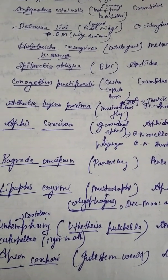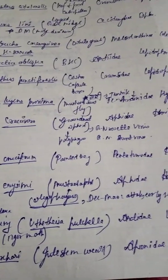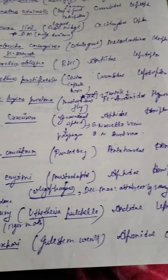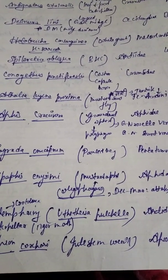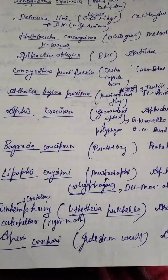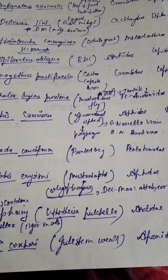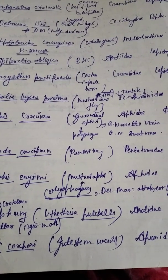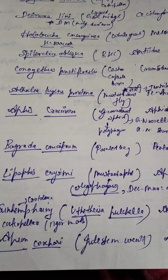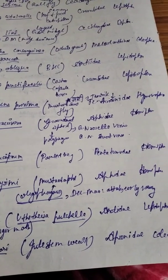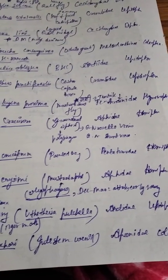Also remember castor capsule borer: Conogethes punctiferalis, family Crambidae, order Lepidoptera. Mustard sawfly is Athalia lugens proxima, family Tenthredinidae, order Hymenoptera. In Hymenoptera the majority are parasitoids, but this is the only major pest of Hymenoptera. Groundnut aphid is Aphis craccivora — very important because it is the vector of groundnut rosette virus and groundnut stunt virus. Painted bug is Bagrada cruciferae, family Pentatomidae, order Hemiptera. Mustard aphid is Lipaphis erysimi, family Aphididae, order Hemiptera.